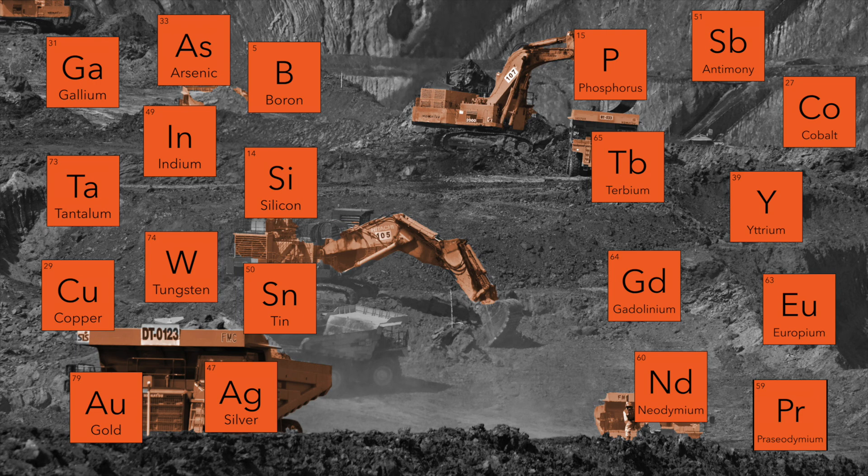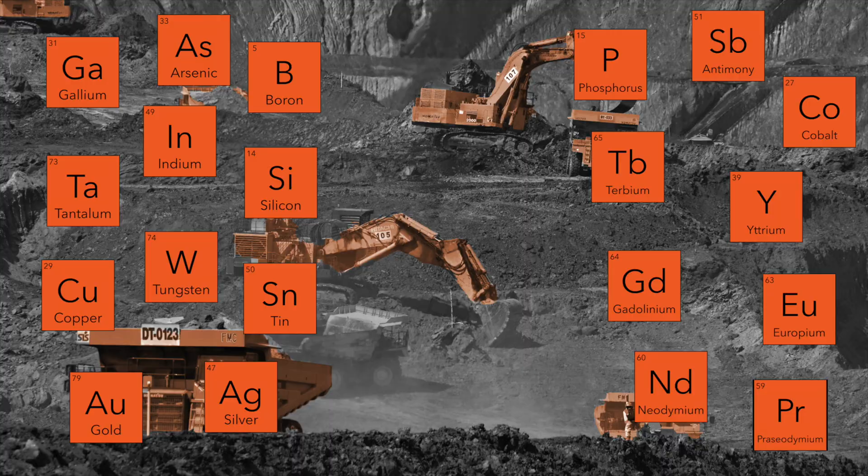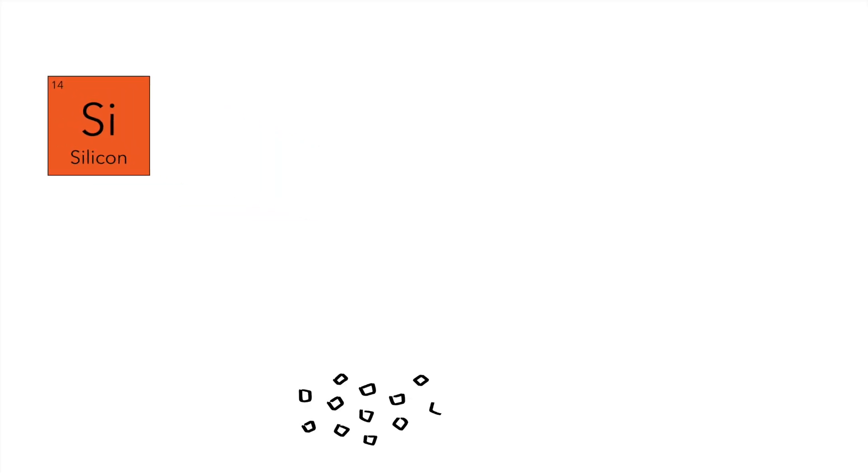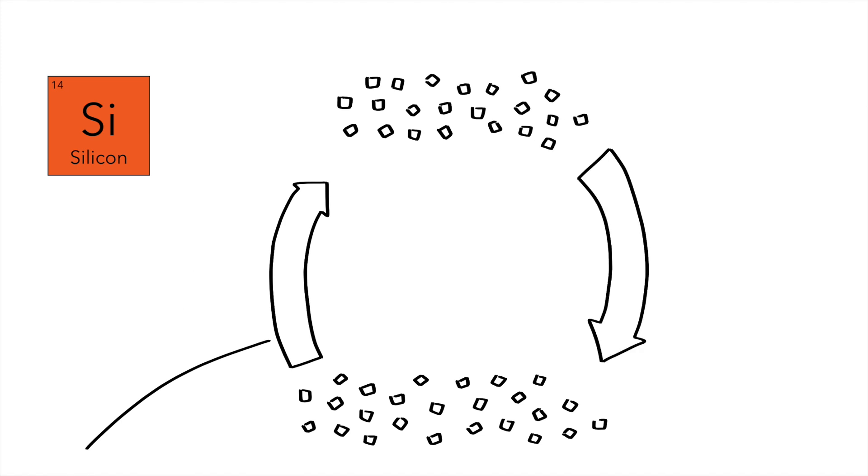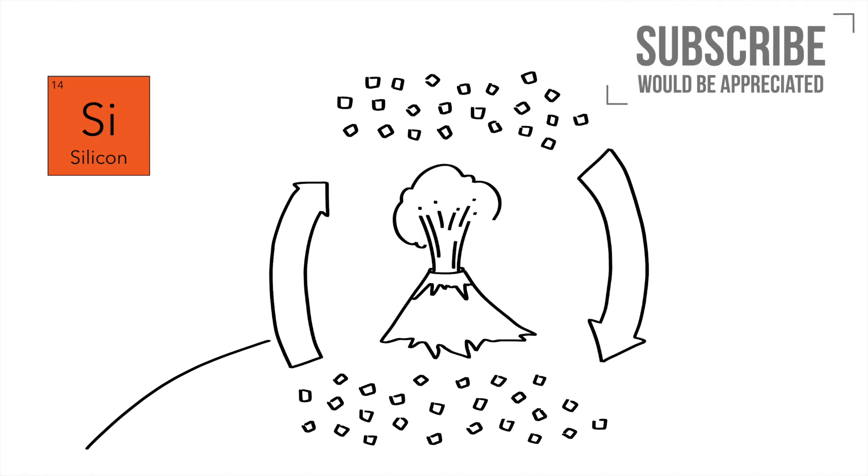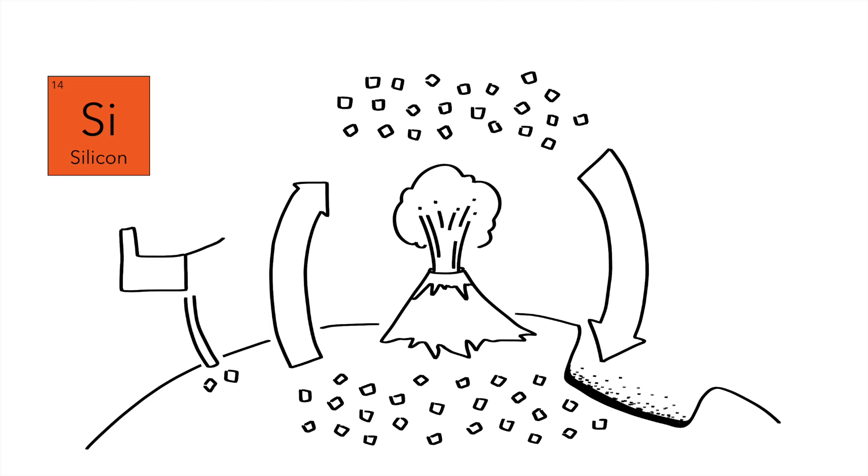But it is the concentrations we are interested in here. And these materials are not all equal in nature. Silicon, for instance, is the most abundant element in the earth's crust. And the natural flow to nature via weathering and volcanic activity is very large. Even if we are extracting large amounts of it for our electronics, we are not systematically increasing its concentration in nature. That's good news.